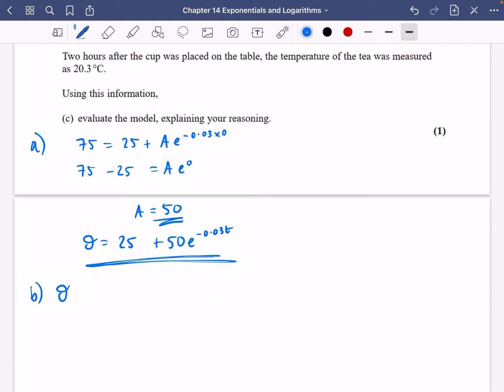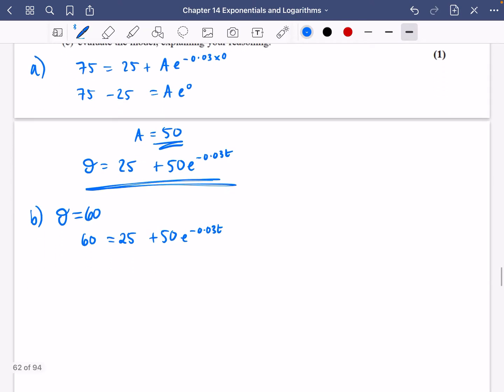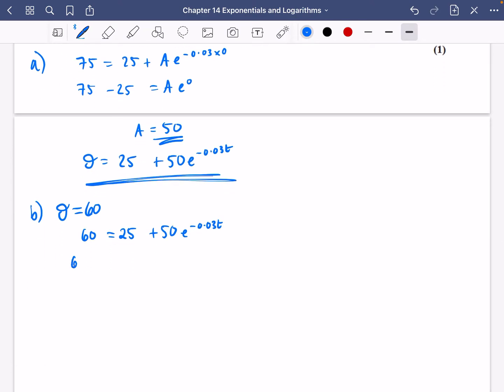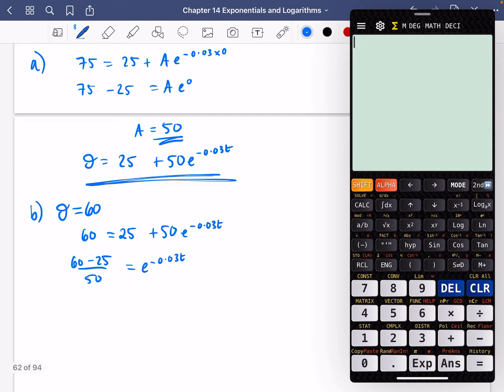Part b says use the model to find the time taken for the tea to cool from 75°C to 60°C, giving your answer in minutes to one decimal place. So theta is 60, which gives 60 = 25 + 50e^(-0.03t). I'll do 60 minus 25 and divide by 50, which gives 0.7 = e^(-0.03t).